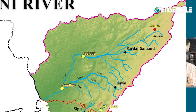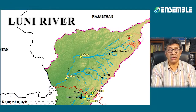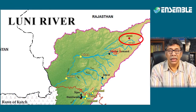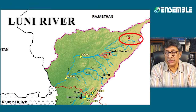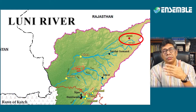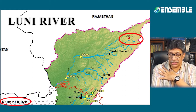The Luni is an endorheic river. It rises from Anasagar near Ajmer and drains into the desert of Rajasthan towards the south-west, merging into the Rann of Kutch.